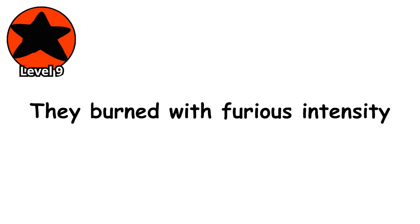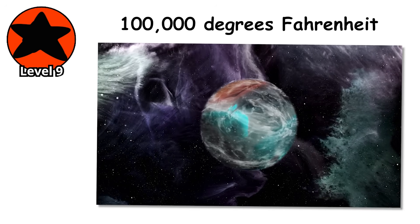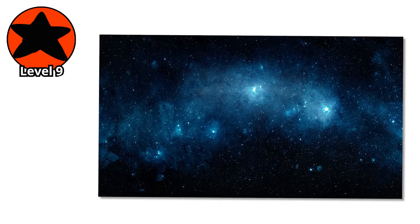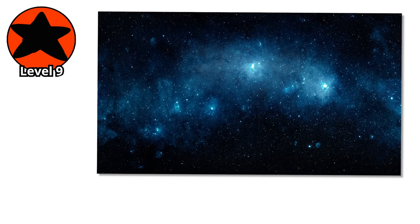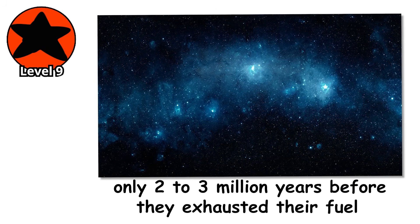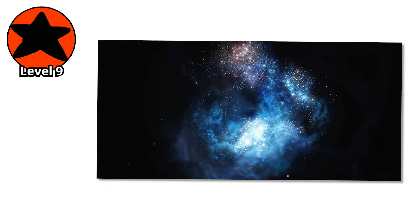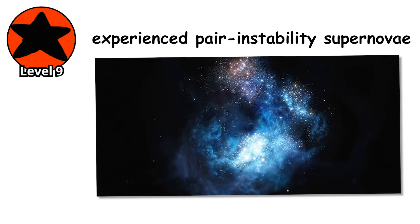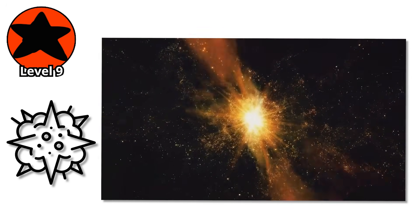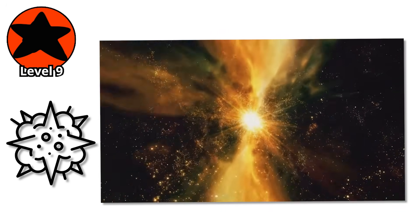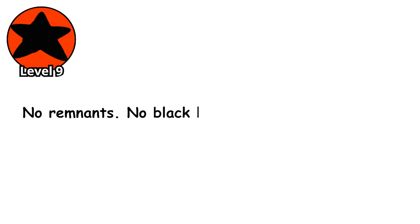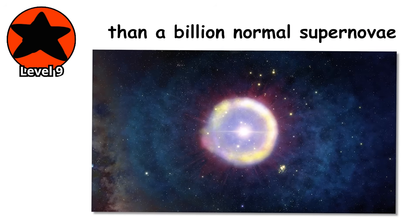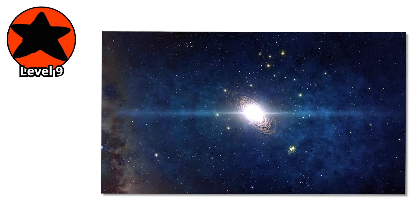They burned with furious intensity. Surface temperatures exceeding 100,000 degrees Fahrenheit, making them appear brilliant blue-white. But their lifespans were incredibly short, perhaps only two to three million years before they exhausted their fuel. When they died, they didn't go quietly. The most massive Population 3 stars experienced pair-instability supernovae, explosions so violent that they completely obliterated the star, leaving nothing behind. No remnants, no black hole, just total annihilation. These explosions released more energy than a billion normal supernovae, briefly outshining their entire galaxy.